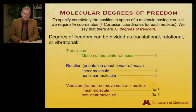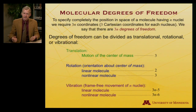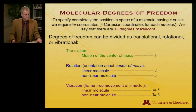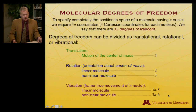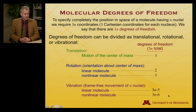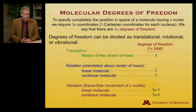The number of vibrational degrees of freedom is determined by taking the total, 3n, and subtracting out the translational — always three — and the rotational — two for linear, three for non-linear. That gives 3n minus 5 vibrations for a linear molecule, and 3n minus 6 vibrations for a non-linear molecule. When you sum them together appropriately, you always get 3n, as you must.